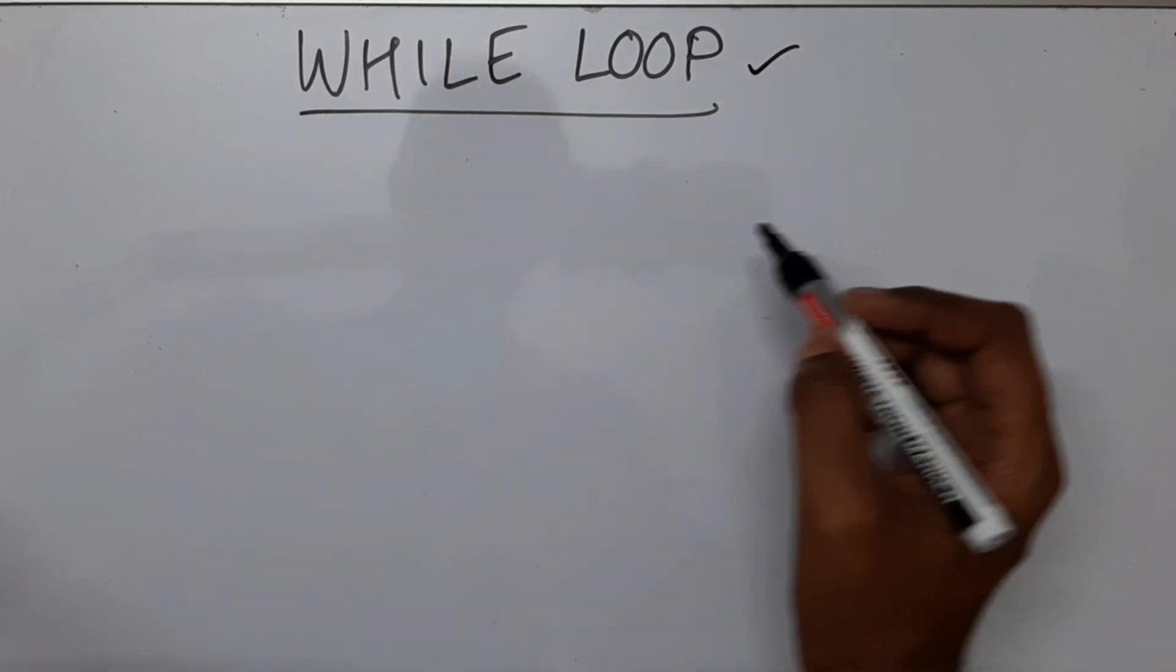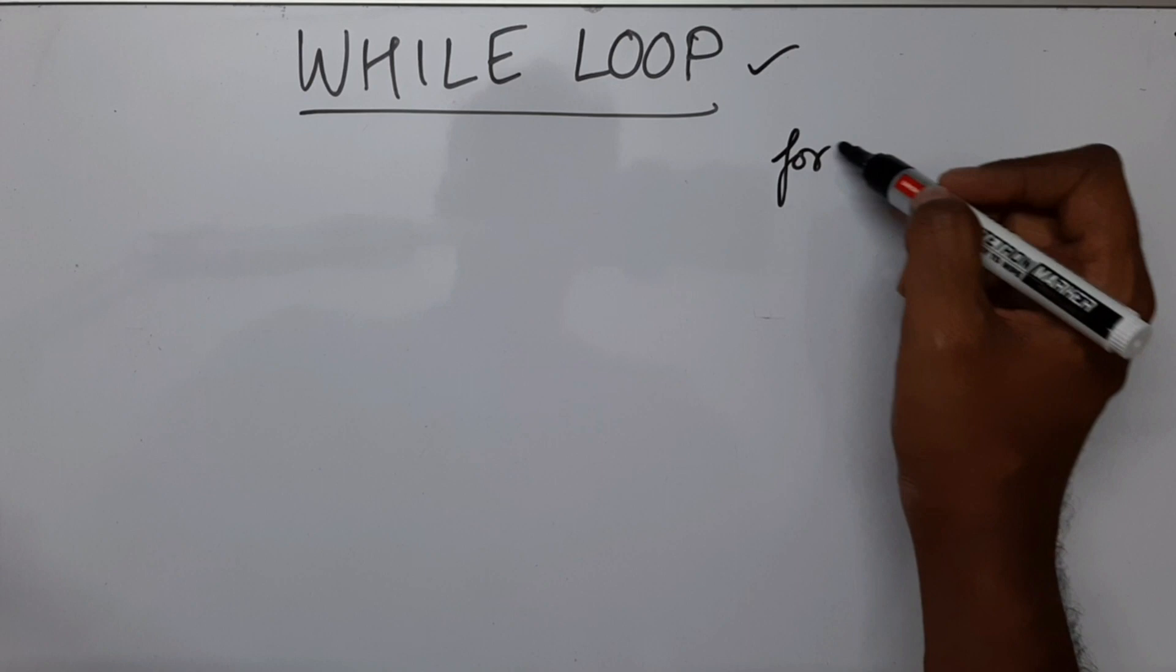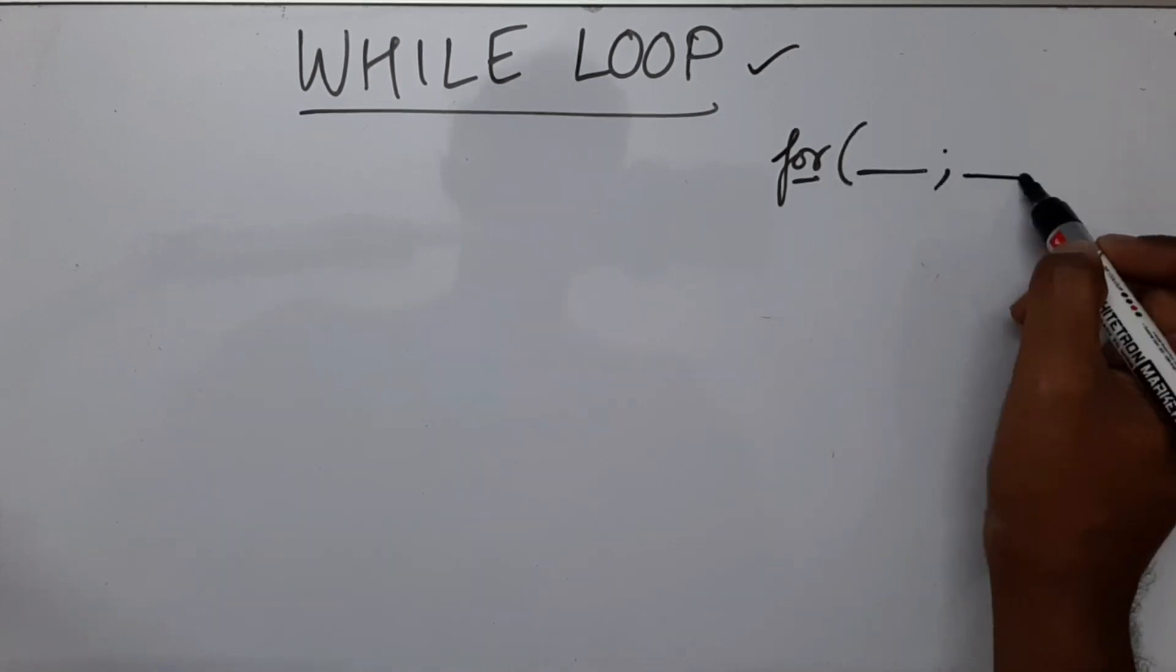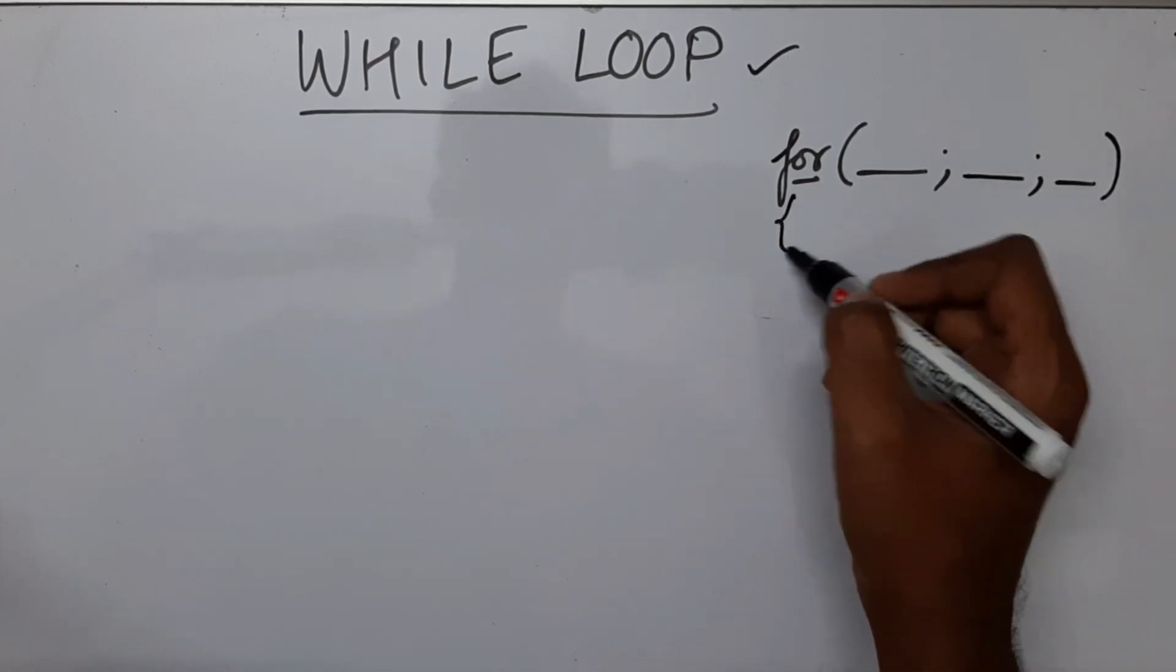So in the last video we saw how to use a for loop. So just let me write it over here. We had the for keyword, then we had the initiation part, the condition part, the updation part, and then we had the body.